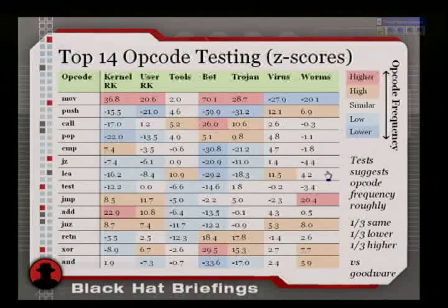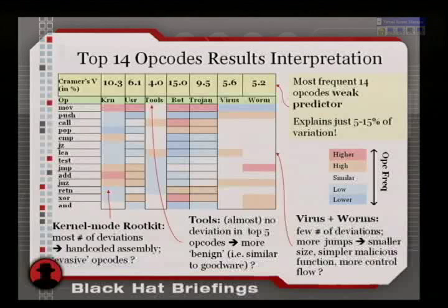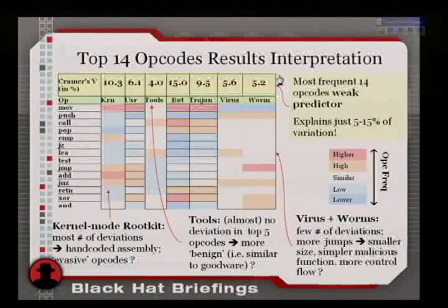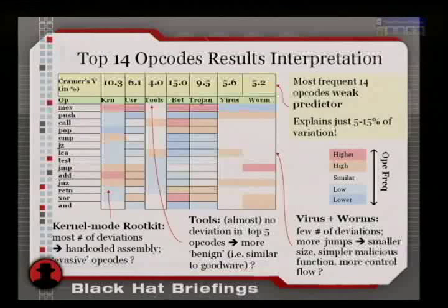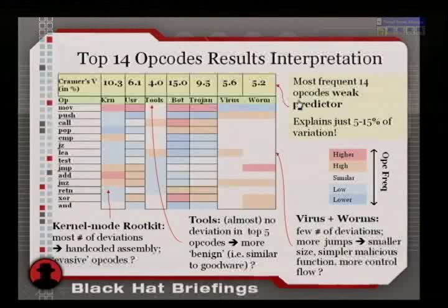What I showed on the previous slide is that, according to the chi-square tests, there is a statistically significant deviation. But there's another statistical test called Cramer's V, which asks: you found an association between the software class and the frequency distribution — but how much of the variation does it explain? What we find is that just 5 to 15% of the variation is explained through this association.